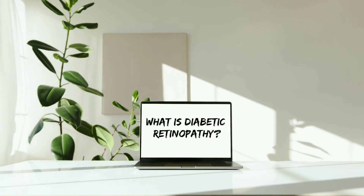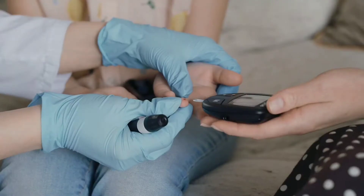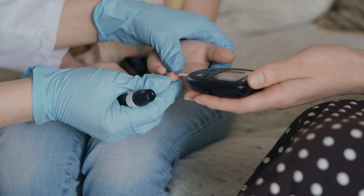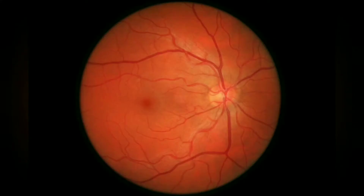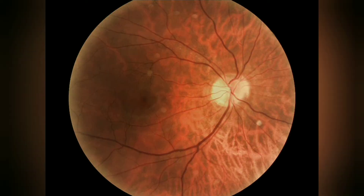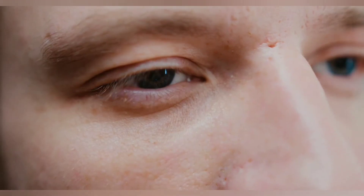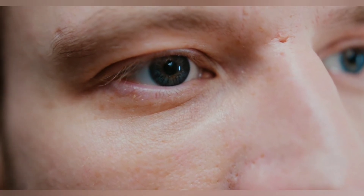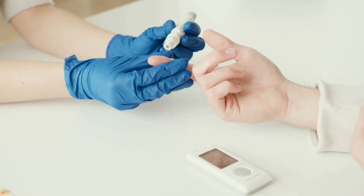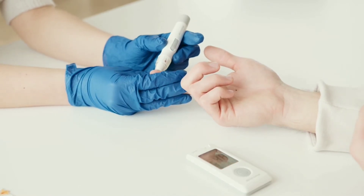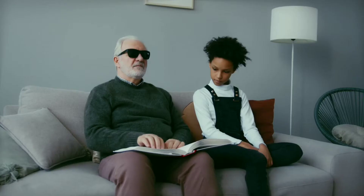Diabetic retinopathy is a complication of diabetes caused by high blood sugar that damages the back part of the eye called the retina. It can be dangerous when not diagnosed and treated, which may lead to loss of vision. Diabetic retinopathy refers to retinal changes seen in patients with diabetes mellitus. With an increase in life expectancy of diabetics, the incidence of diabetic retinopathy has increased.